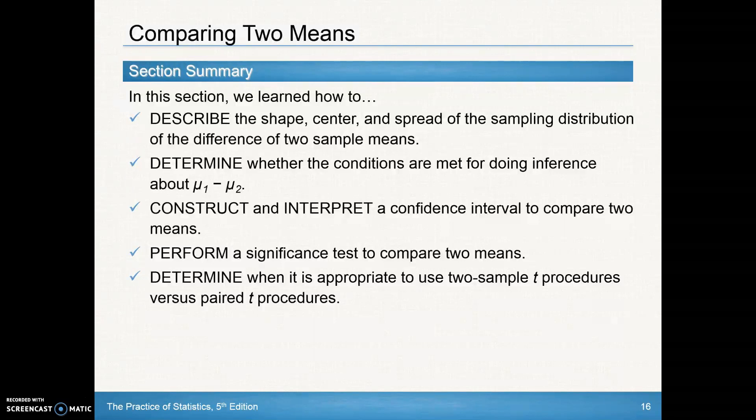We're done with section 10.2 on comparing two means. You should be able to describe the shape—look to see if it's normal. Describe that center. The difference in our sample data should be the difference in our population data. Looking at spread, the key thing is making sure you can't just add or subtract standard deviations. You got to work with variances.